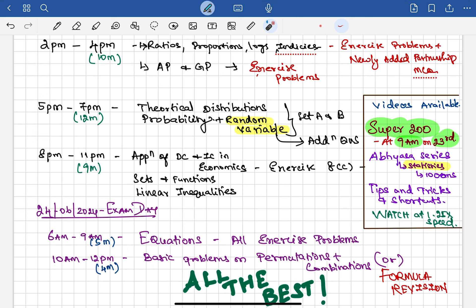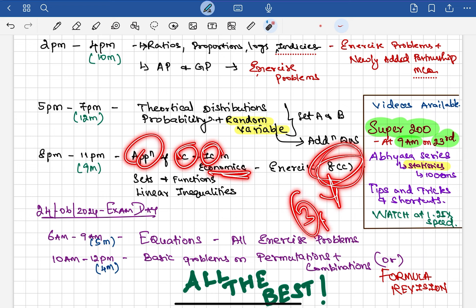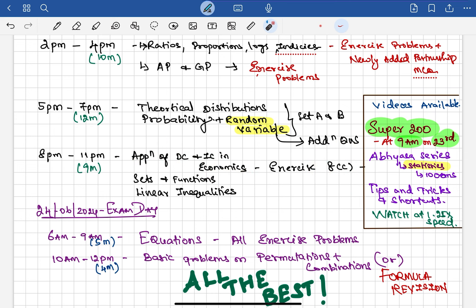Take a one-hour break, then from 5 PM to 7 PM, study Theoretical Distribution and Probability and Random Variable. Set A and Set B is compulsory for theoretical distribution. Then after a one-hour break, 8 PM till 11 PM, do Application of Differential and Integral Calculus in Economics—that is Exercise 8C. This video we have uploaded in three parts recently. Just spend it by watching at 1.5x speed. Then Sets and Functions—easily three marks guaranteed. Linear Inequality—one mark or maximum two marks—you can focus on Tips and Tricks videos.